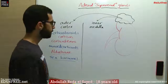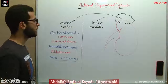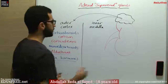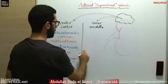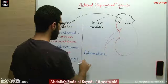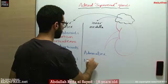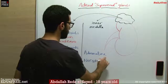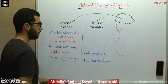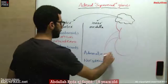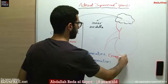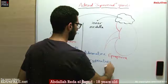As for the inner medulla, there are two important hormones secreted from it: adrenaline and noradrenaline, also known as epinephrine and norepinephrine.